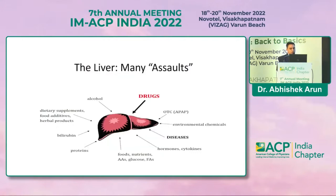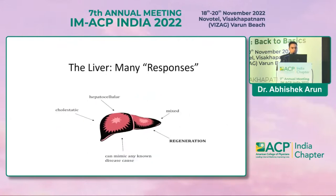The liver is one of the organs which has been very vulnerable, yet it adapts remarkably. It is assaulted by many insults like alcohol, drugs, various environmental chemicals, over-the-counter use of acetaminophen, diseases, hormones, cytokines, various adulterants, proteins, bilirubins, dietary supplements, food additives, and even herbal products, which are one of the main causes of liver injuries today. Its responses include cholestatic phase, hepatocellular injury, a mixed response, and it can mimic any other known disease cause, and it can even regenerate.